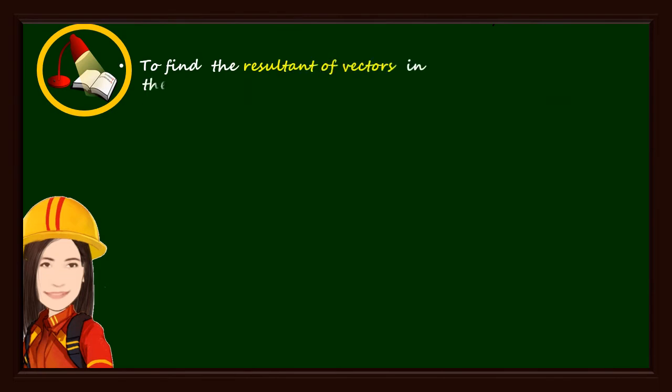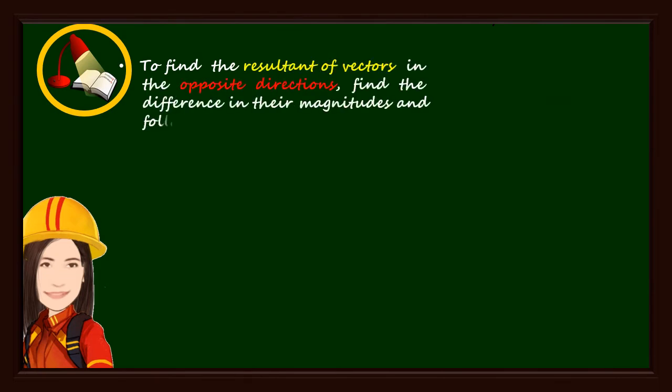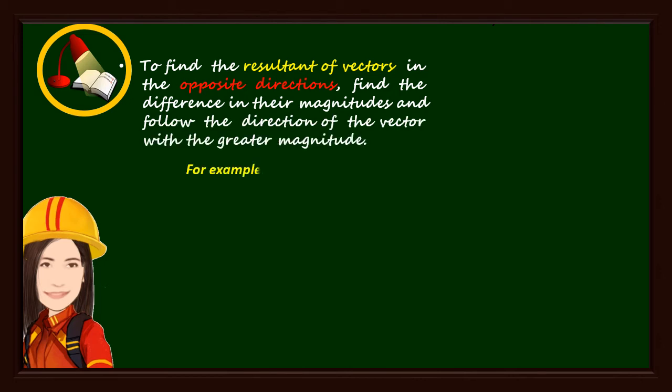To find the resultant of vectors in opposite directions, find the difference in their magnitudes and follow the direction of the vector with the greater magnitude.